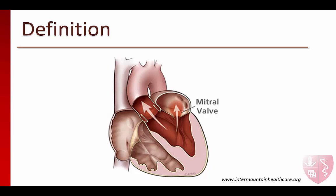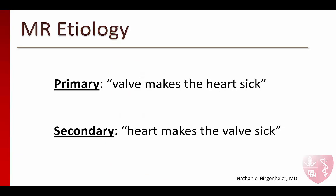This lecture is about mitral regurgitation, which is defined as the regurgitation of blood through the mitral valve during systole. It is helpful to divide the causes of MR into two general types: primary and secondary. In primary MR, the valve makes the heart sick. It is structural damage to the valve itself that causes it to become leaky and regurgitant. Chronic regurgitation can lead to left ventricular failure and pulmonary venous hypertension. Since the initial pathology involves the valve itself, primary MR is typically, but not always, amenable to surgical correction.